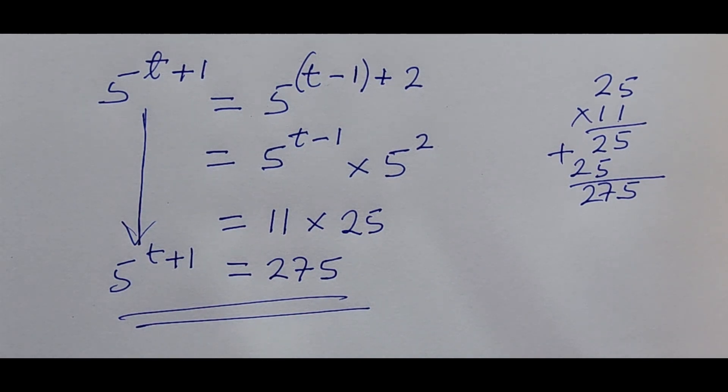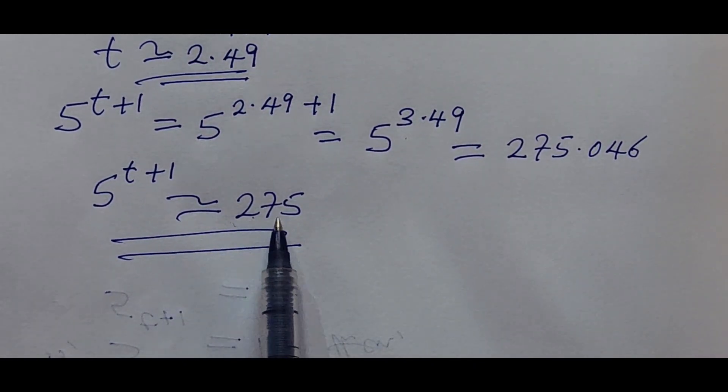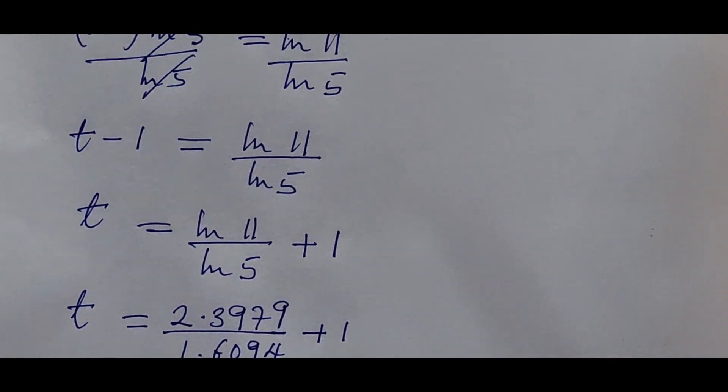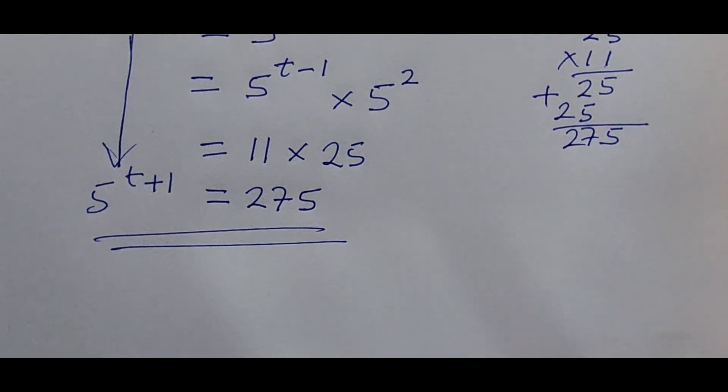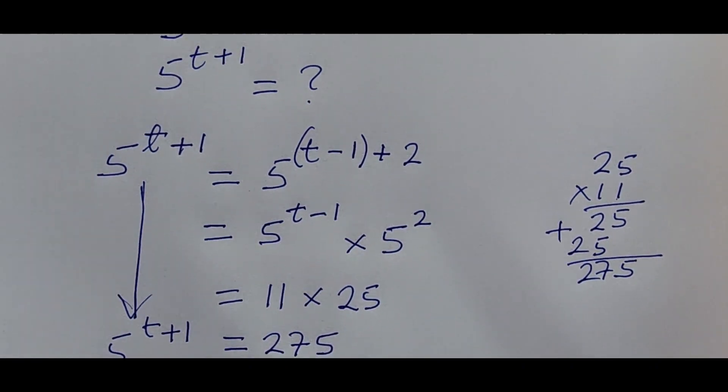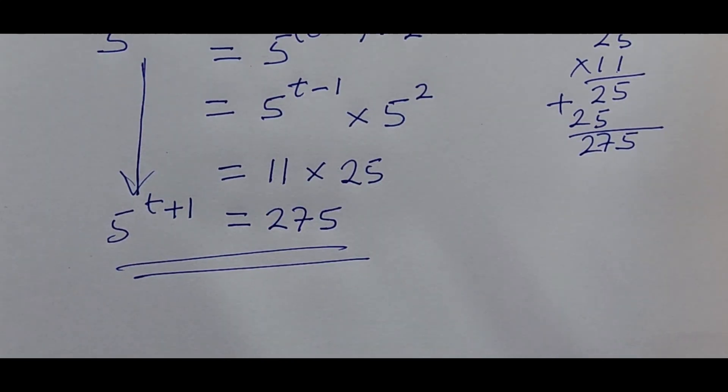So therefore, we bring our expression down here now. Therefore, our 5 to the power of t plus 1 is equal to 275, which corresponds with the answer we got in the first method. Look at it here. We got 275 from the first method, which is this very method we applied here. But in our second method, we have just two steps and we got our answer very easy and straightforward.